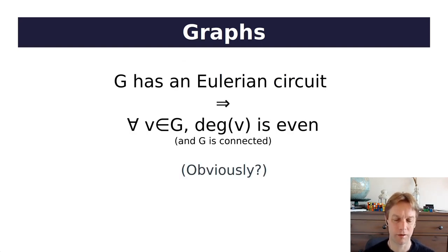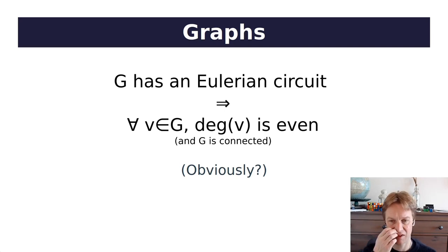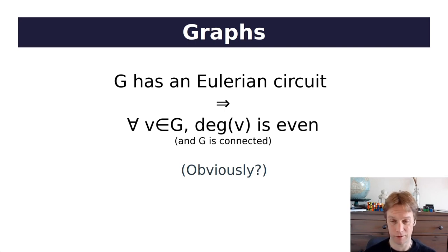Why are we talking about Eulerian circuits? Because we're going to figure out some maths about them. Here is our first mathematical statement. If you didn't see the set theory video, some of this might look intimidating, but I'll talk you through it. The arrow in the middle means if-then. The statement says: if a graph has an Eulerian circuit in it, then for all vertices in the graph, the degree of that vertex is even — every vertex has an even number of edges connected to it. I've written a question mark below, because that's the kind of thing your maths lecturer will say, and then you're supposed to figure it out.